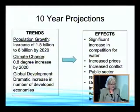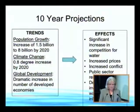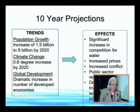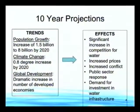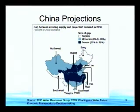Over the next decade, the trends are concerning in many ways. We have population growth — an increase of approximately 1.5 billion people by 2020 — climate change on top of that, and global development creating dramatic increases in the number of developed economies, putting pressure on resources. The effects on water include a significant increase in competition for water, increased prices, increased conflict, more public sector response, and increased demand for investment in water infrastructure. A recent report by the 2030 Water Resources Group, 'Charting Our Water Future,' looks at the gap between existing supply and projected demand by 2030.